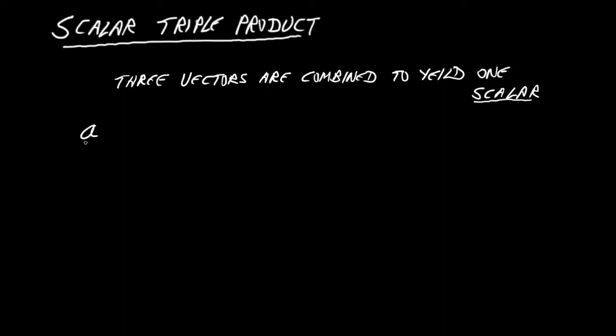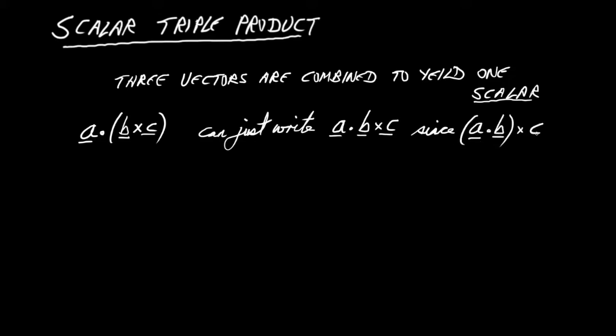Suppose we have A, we dot it with B, which itself is crossed with C. That is the Scalar Triple Product, that combination. Now here I've put brackets to emphasize to do the cross product first. But we can just write A dot B cross C without the brackets. Why? Because we have to do it in the correct order. If we try to do A dot B first and then cross that with C, it's nonsense because that will be a scalar cross-producted with a vector. It doesn't make sense.